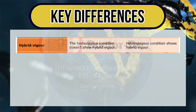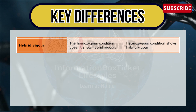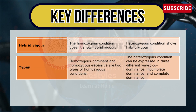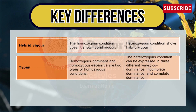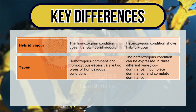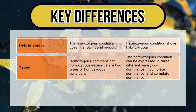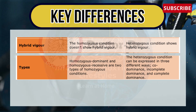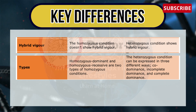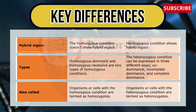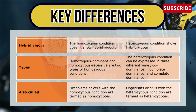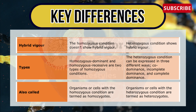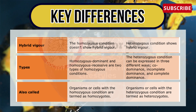Regarding hybrid vigor, the homozygous condition doesn't show hybrid vigor, whereas the heterozygous condition does. Regarding types, homozygous dominant and homozygous recessive are two types of homozygous conditions, whereas heterozygous conditions can be expressed in three different ways: codominance, incomplete dominance, and complete dominance. Organisms or cells with homozygous conditions are termed homozygotes, whereas organisms or cells with heterozygous conditions are termed heterozygotes.